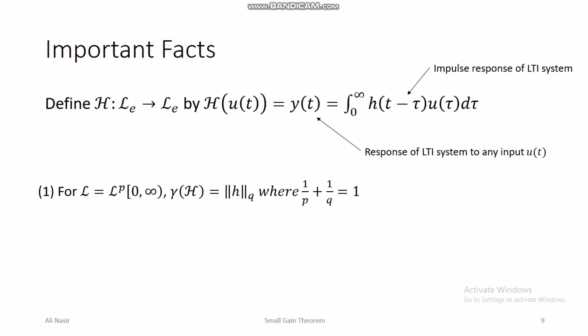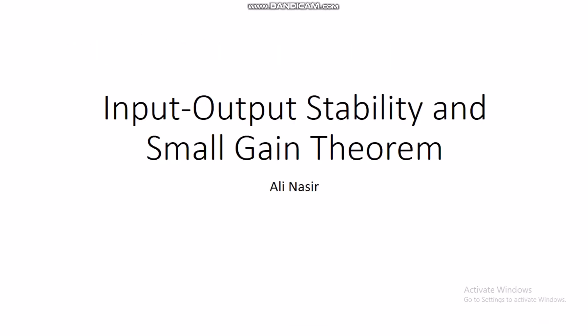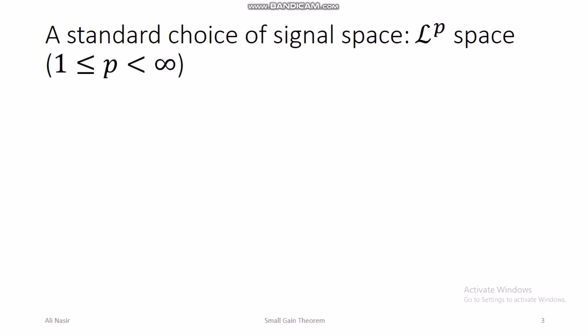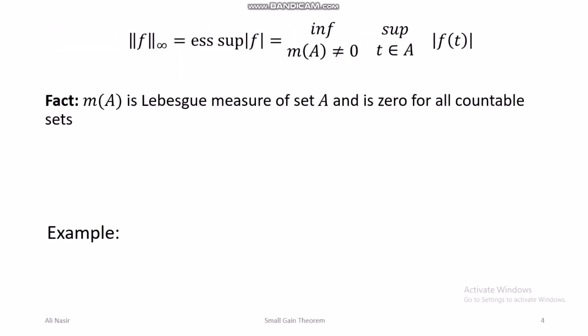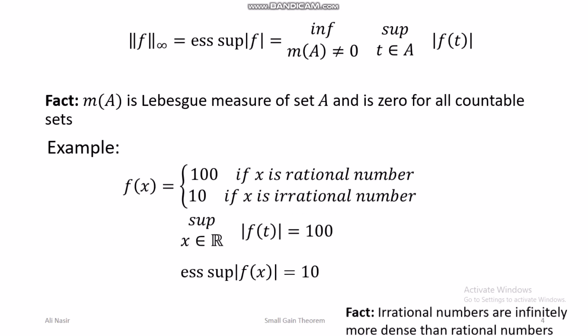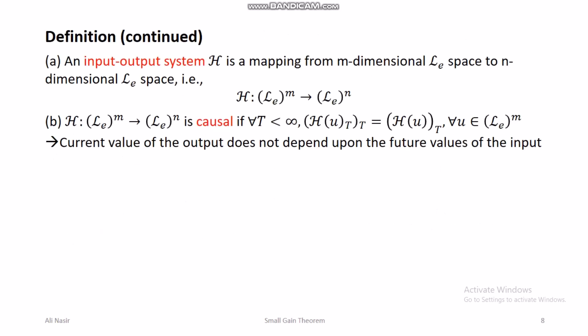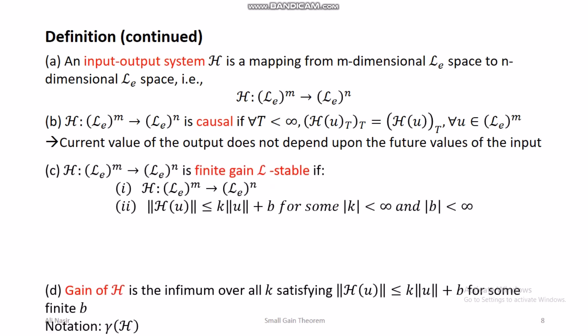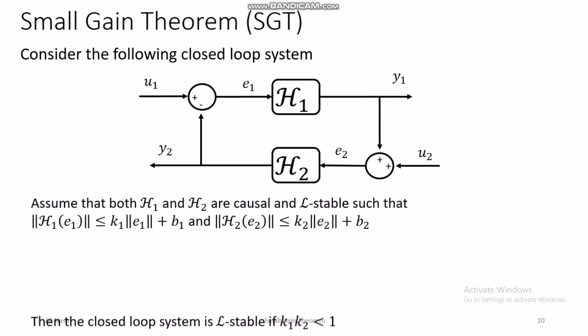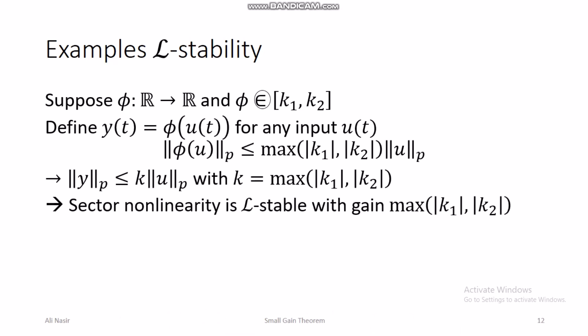To recap: in this lecture we discussed input-output stability and the small gain theorem. We first looked at key questions, the standard choice of signal spaces, Lebesgue measure, and essential supremum. We then addressed the problem with LP spaces and defined extended LP spaces. We defined input-output systems, causal systems, and finite-gain L-stable systems, discussed gain in the context of LTI systems, and finally stated the small gain theorem. Hope you understood this concept — see you in the next lecture.